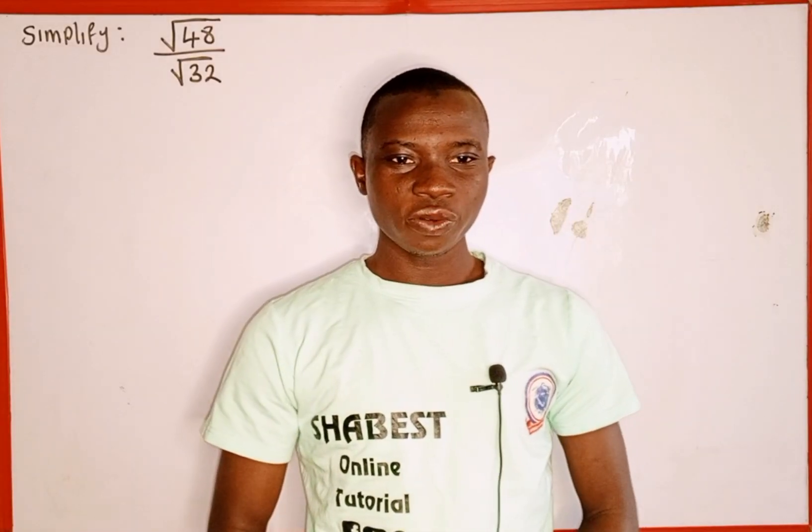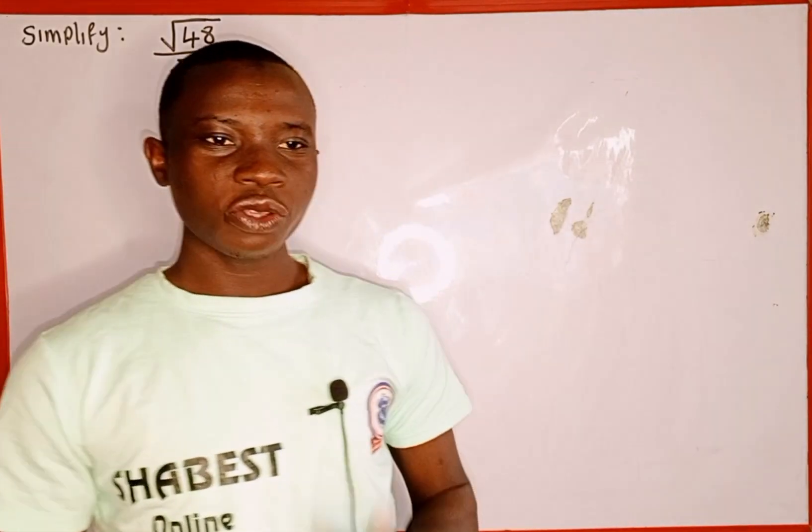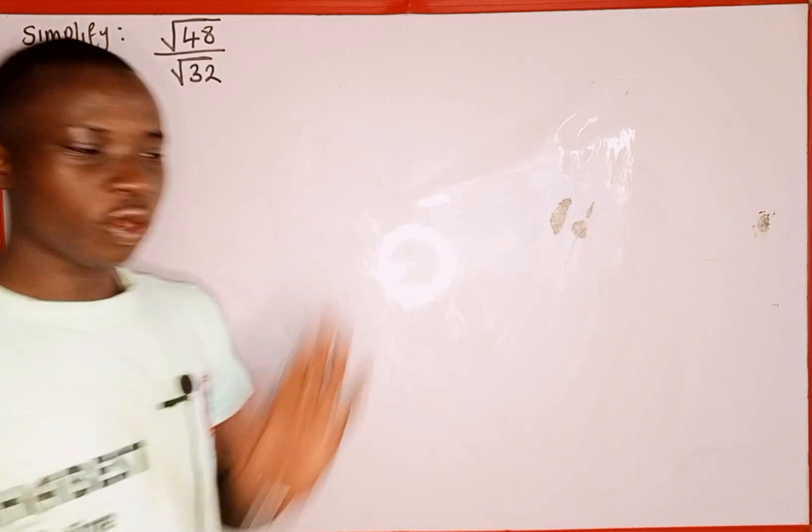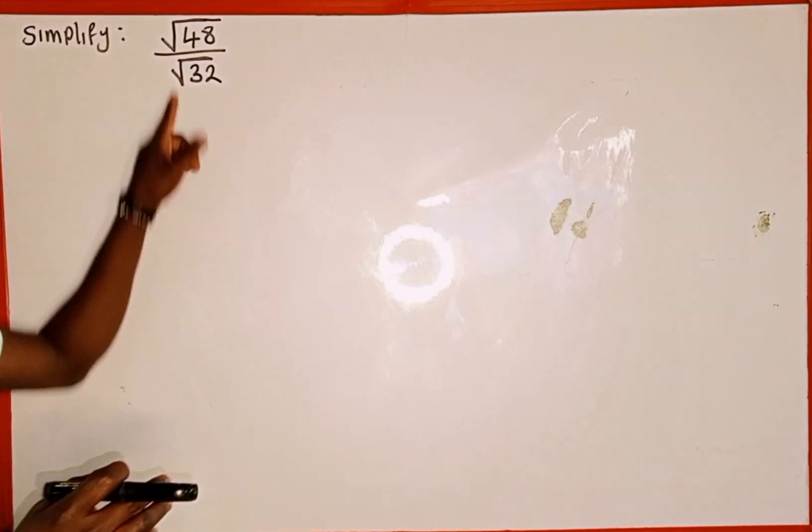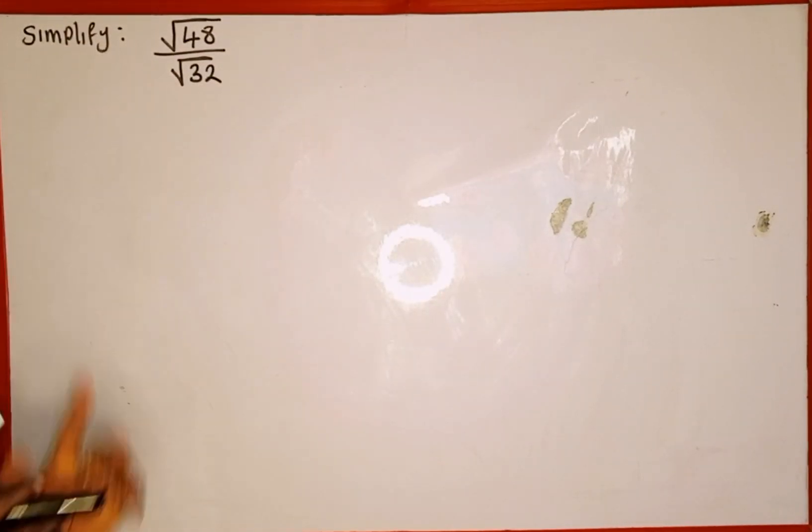Hi guys, welcome back to Shabbat's online tutorial. In today's tutorial, we're going to learn how to simplify this surd expression on the board. And the given expression is what? Square root 48 divided by square root 32.